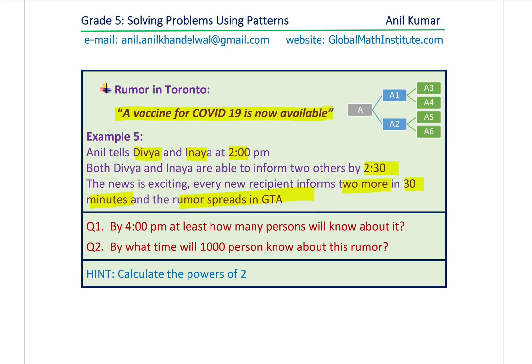Every new recipient informs two more in 30 minutes, and the rumor spreads in GTA. Based on this, we have two questions. Question number one: by 4 p.m., at least how many persons will know about it? Question number two: by what time will 1,000 persons know about this rumor? You can always pause the video, answer the question and then look into my suggestions.